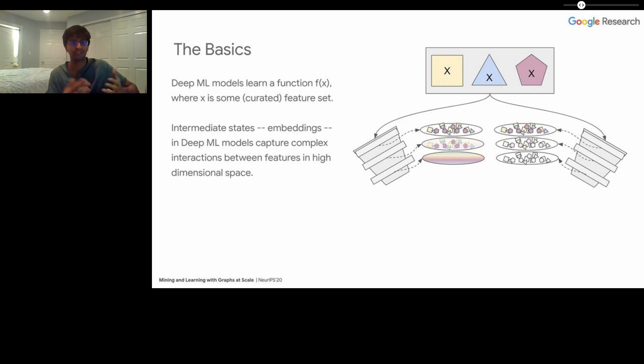We pass these shapes and colors, these underlying features, into a stack of linear algebra transformations. Each transformation produces an intermediate state for our deep model. We call these intermediate states embeddings. These embeddings capture complex interactions between features in a high-dimensional space. If you have a lot of features at your input and they correlate with each other in ways that are difficult for a human to understand or even expect, you just throw them into the model and the model is able to project all of these into a 64 or 128 dimensional space and discover the correlations inherent in the underlying data.